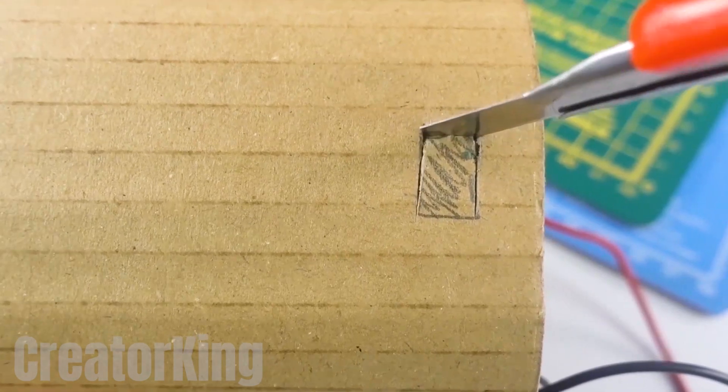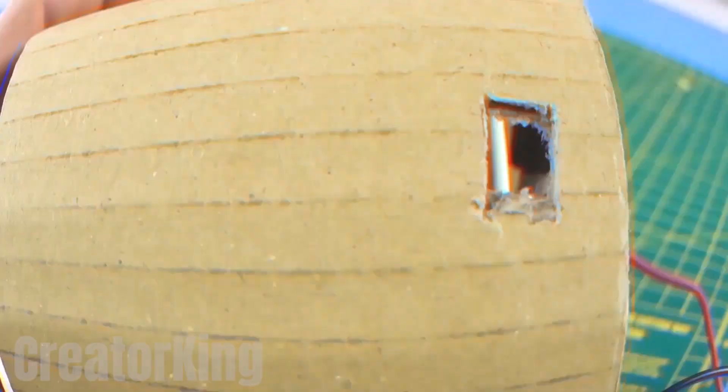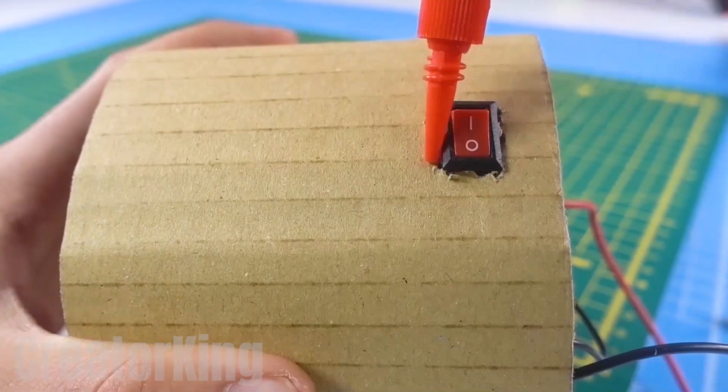Cut and remove this little square to be able to place the switch there. Glue it with some super glue and test that it works perfectly.